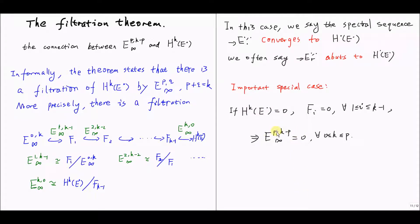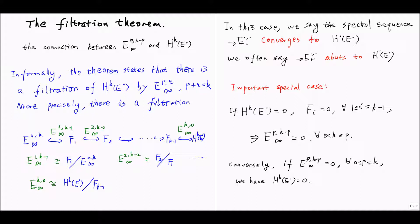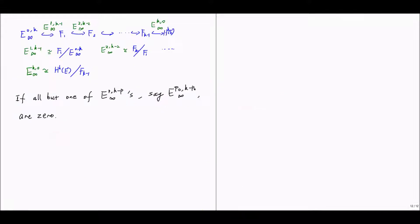This special case will frequently appear in our applications. Conversely, if we know the information of each stabilized object involved here, we can determine F_1, F_2, all the way through F_{k-1}, and we can determine the k-th cohomology of the total complex through this filtration theorem. For instance, if we know the stabilized objects involved in this filtration are all 0, then we can also conclude that the k-th cohomology of the total complex is also equal to 0. If all but one of those stabilized objects are 0, then we can conclude that this last object is equal to the only non-zero object, and this follows easily from the filtration.